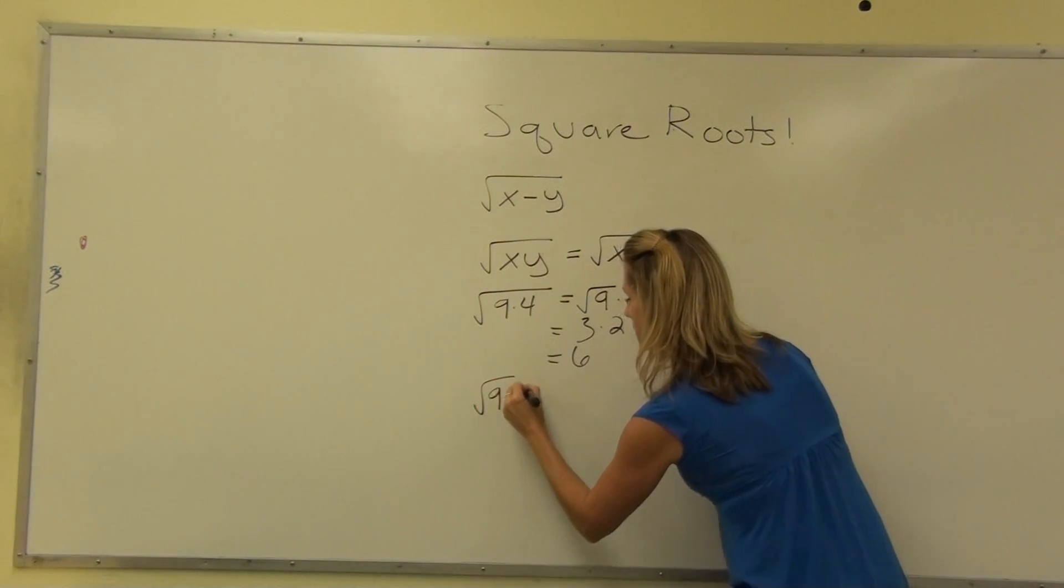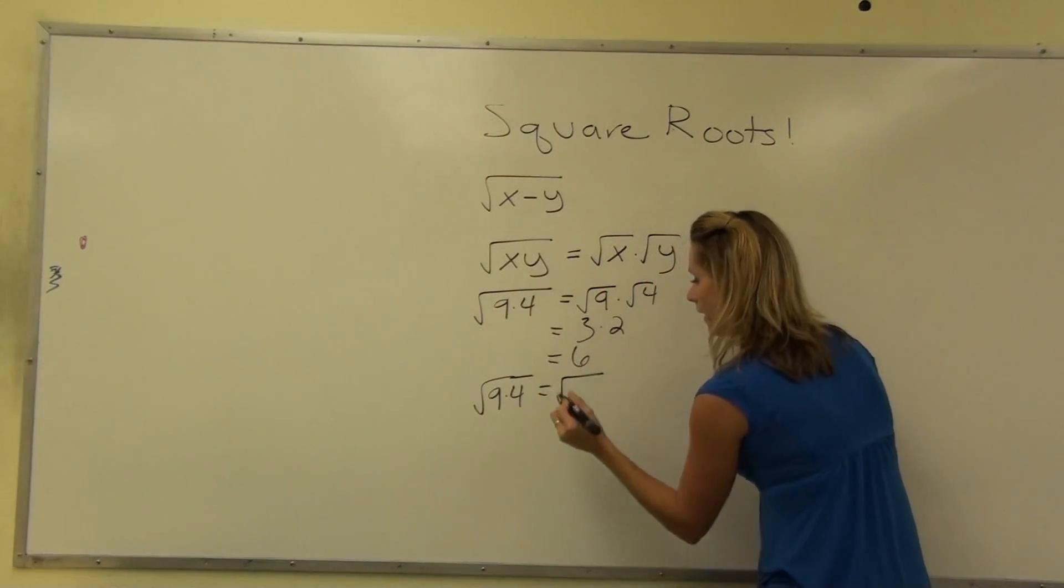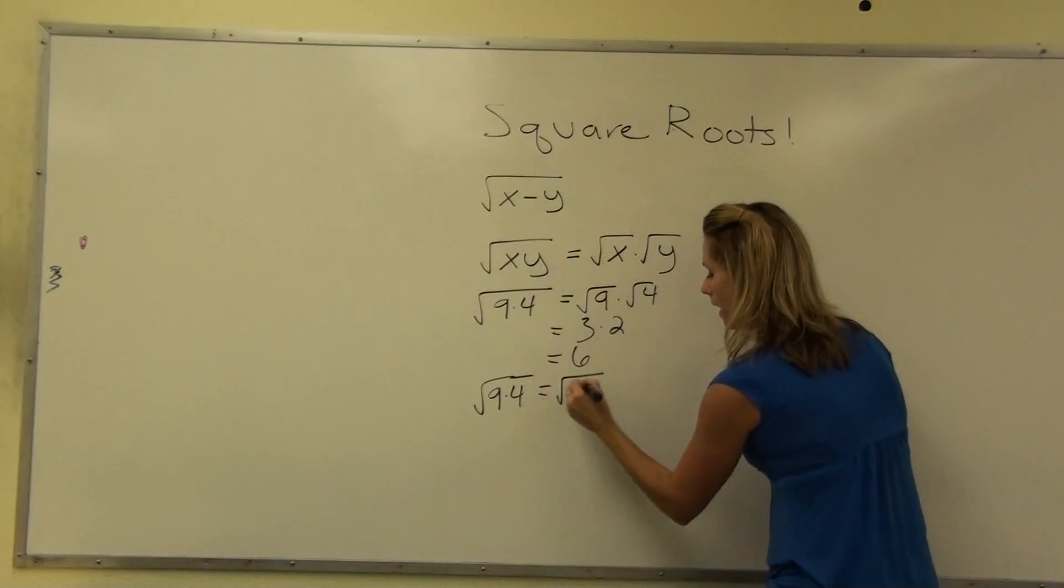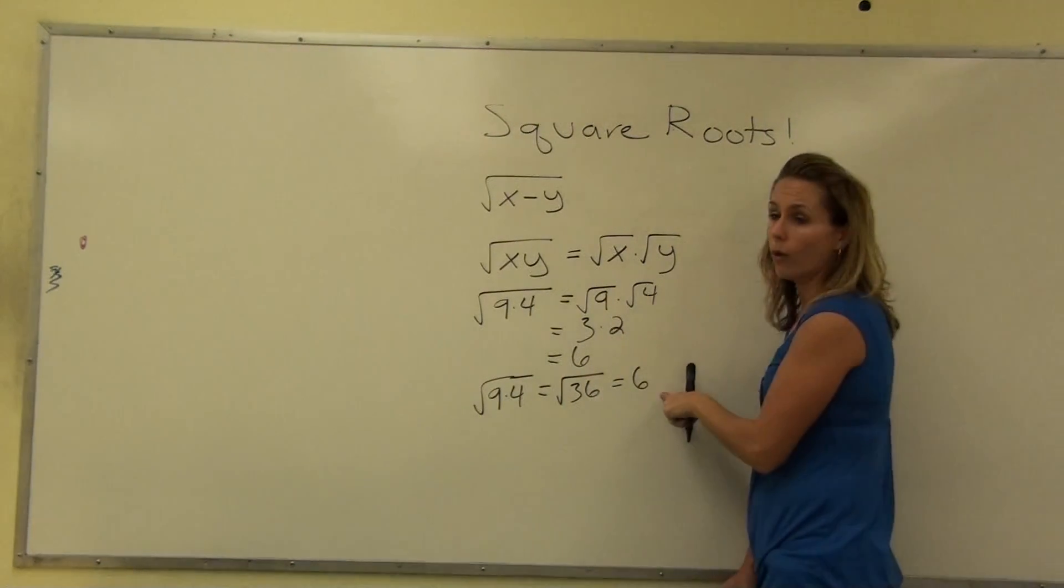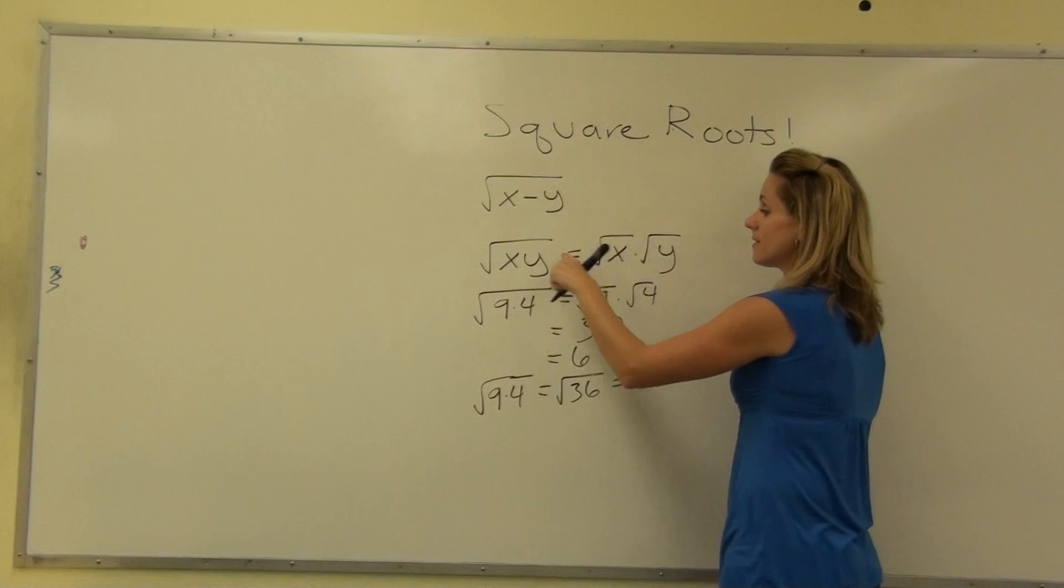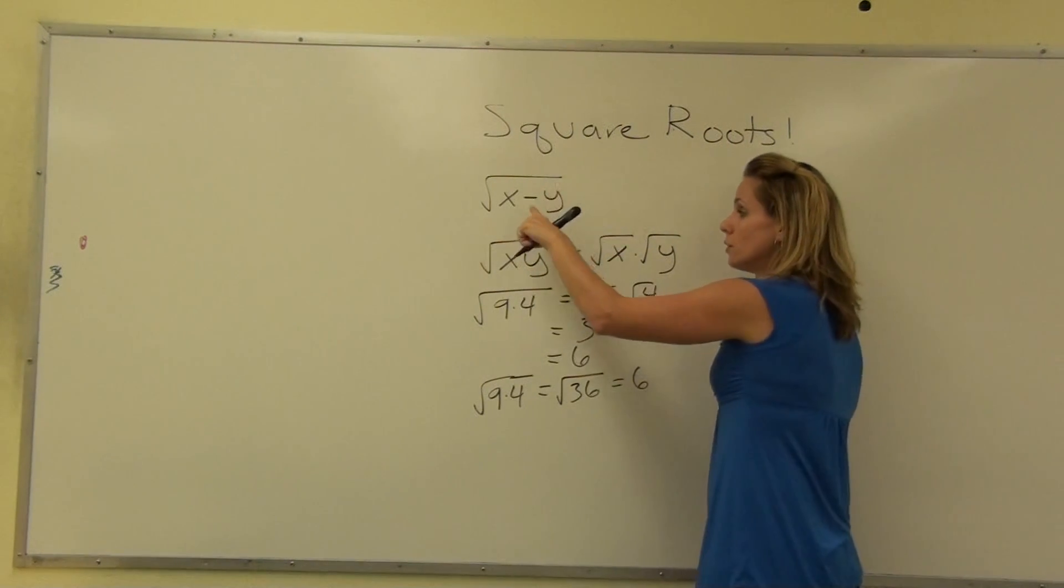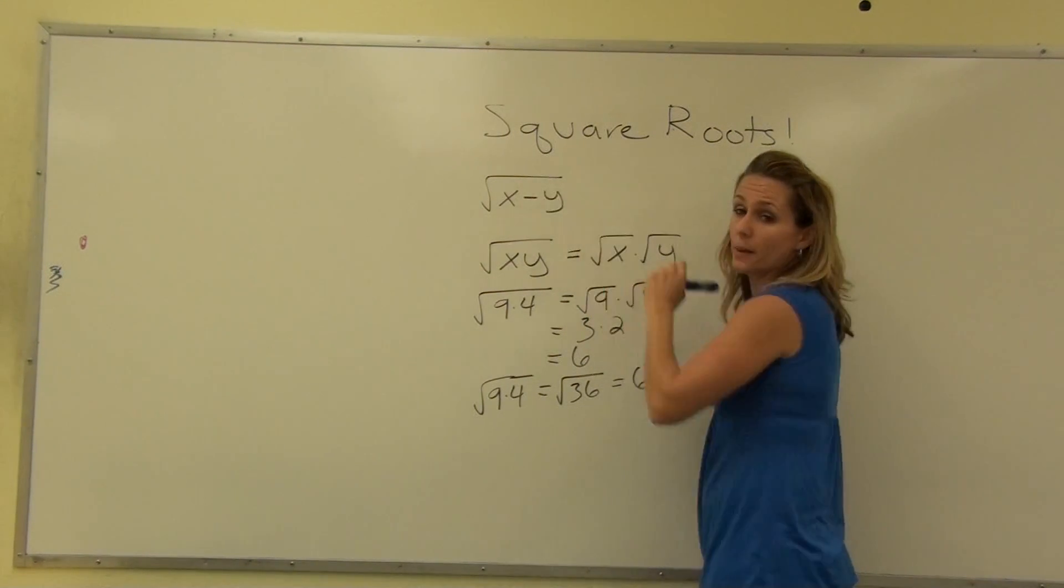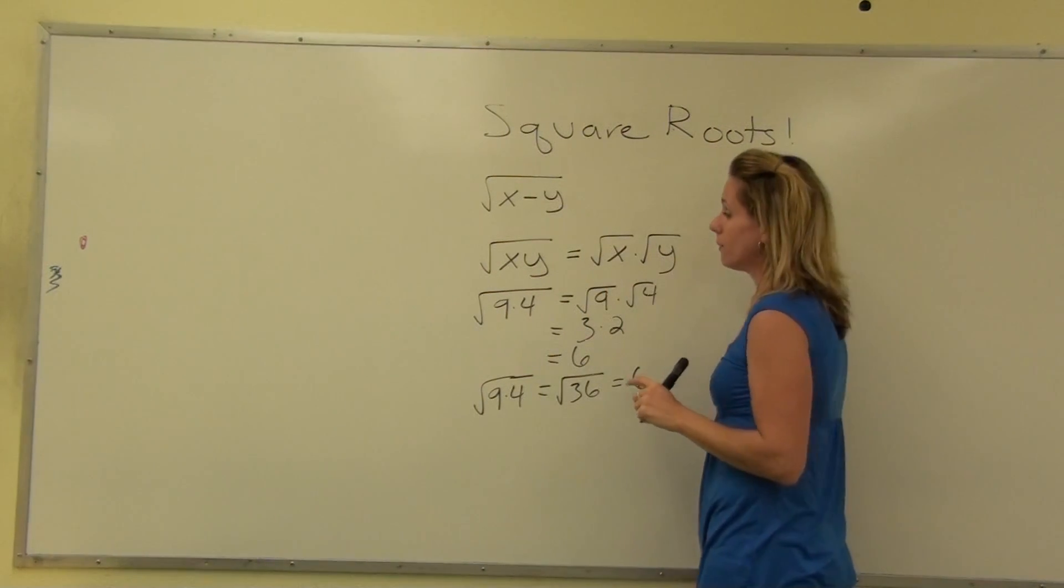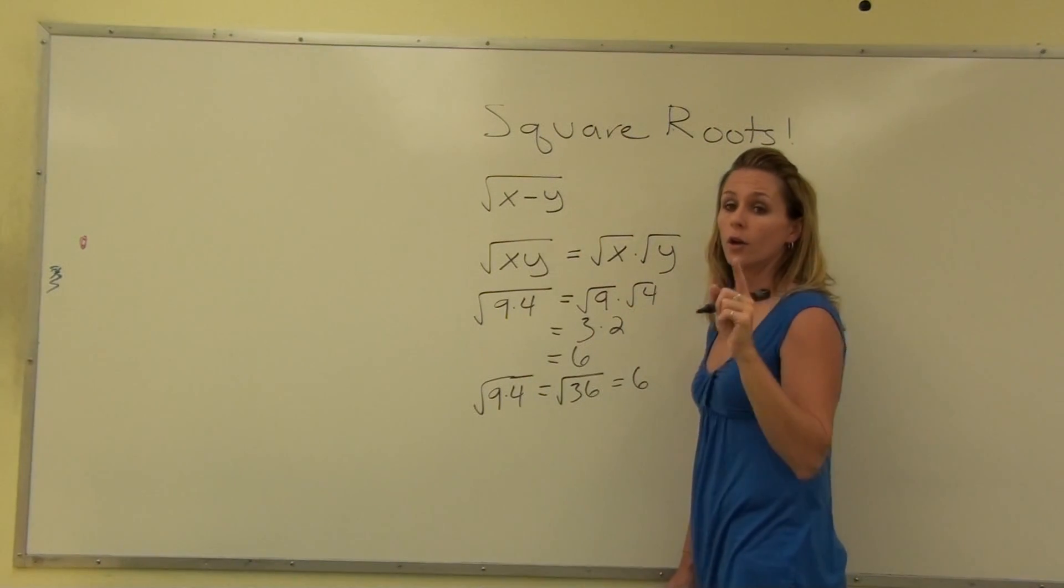Or, we could do what's underneath the grouping symbol first. 9 times 4 is 36, and the square root of 36 is 6. These two things are equal, so we know that this is a true statement. So be careful. Do not split things apart underneath a radical sign if they are separated by an addition or subtraction sign. But go ahead and do it if you have multiplication. Good luck.